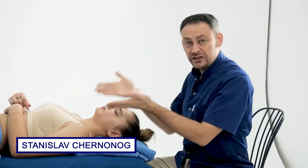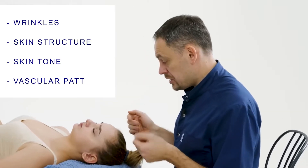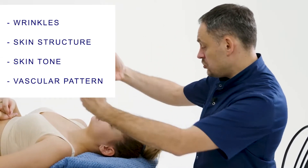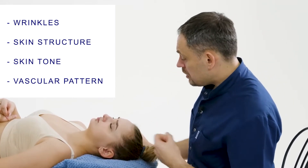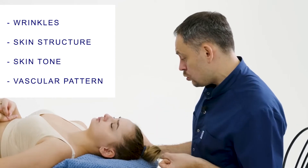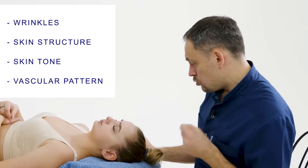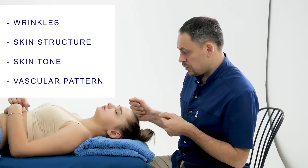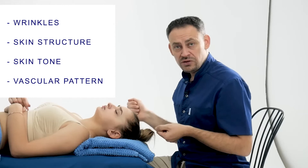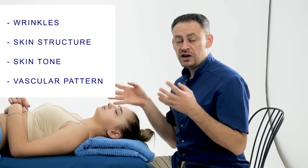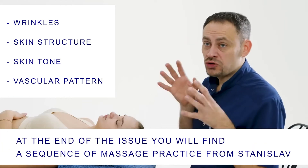How do we determine biological age on the face? First, we must remember that the older a person, the more wrinkles they have. Therefore, the presence of wrinkles on the face and along the décolleté zone is the criterion by which we are guided. In addition, we are interested in the structure of the skin. If the skin has small uniform pores and high tone, we say that it is a young person. When the face begins to sag, pores begin to enlarge, and the vascular pattern becomes visible, we say that the person is aged.